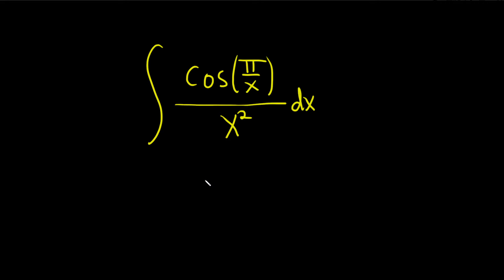Integrate the cosine of pi over x divided by x squared. So the natural thing to do, or to try to do, is to let u be what's inside this cosine function. So we'll let u be equal to pi over x. Even if you don't see the solution right away, it's always a really good first attempt to let u be like your inside function.